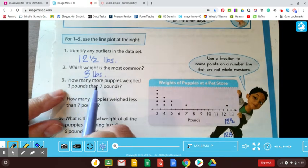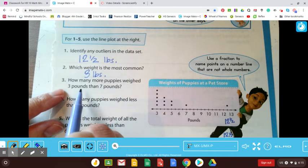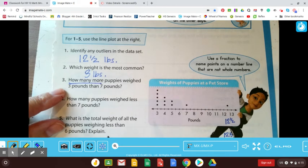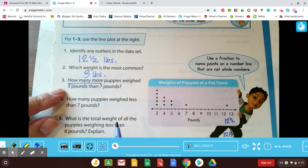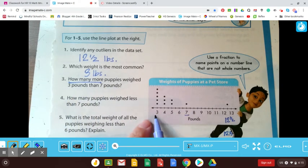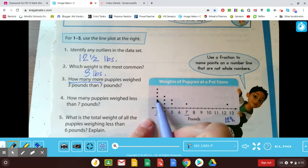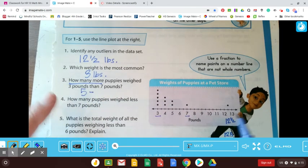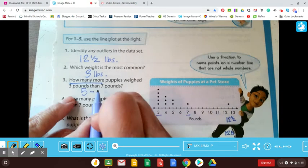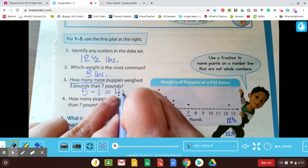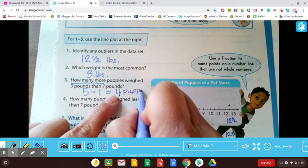How many more puppies weighed three pounds than seven pounds? They love to ask these how many more questions. It signals to me subtraction. So how many more puppies weighed three pounds than seven pounds? These are the two that I'm comparing, right? So there's one, two, three, four, five puppies that weighed three pounds, and there's only one puppy that weighed seven pounds. So my answer would be four puppies or four more puppies.